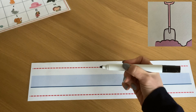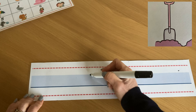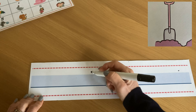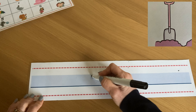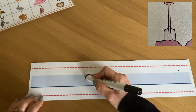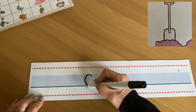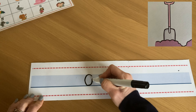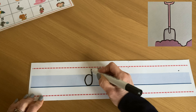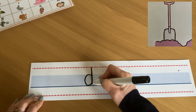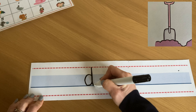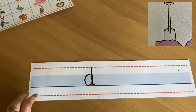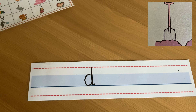Let's put our pen here, so we start in the blue area. Start with a C - it's our curly caterpillar - and then climb a tree and come back down to make a D. Our next sound is the I.